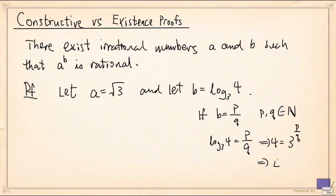And that means 4^q = 3^p. But both sides are integers, and p cannot be 0. And the left hand side is not divisible by 3, so this is impossible. Alright, so b is irrational.